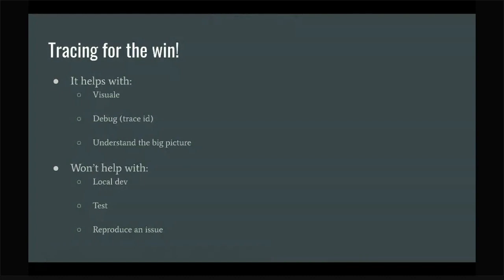OpenTelemetry and Jaeger help you visualize a flow and help with debugging if you make sure to write the trace ID whenever you can. I did a solution where every log entry has a trace ID — that's why it's super easy for me to debug. Most importantly, it helps you understand the big picture. A developer who makes an impact must know the bigger impact of what they're doing. It won't help with local development, deciding which tests to write, or reproducing an issue — it gives you the flow but not the actual data to reproduce a specific flow.